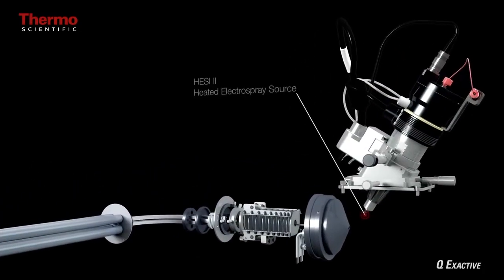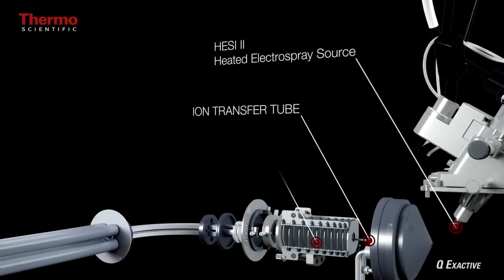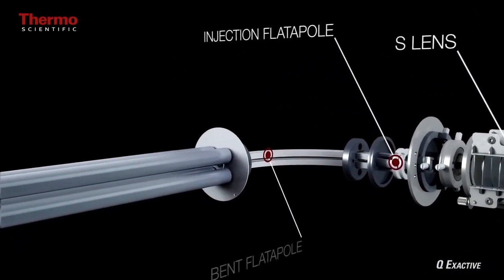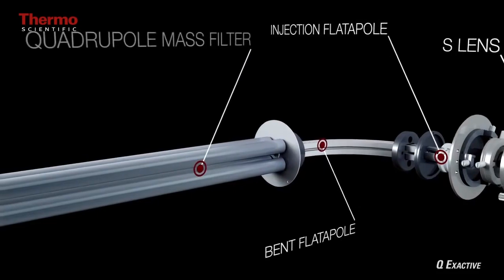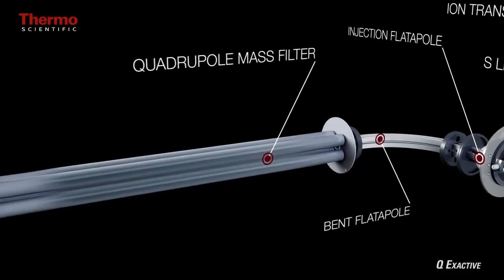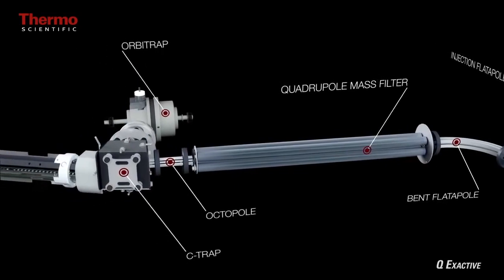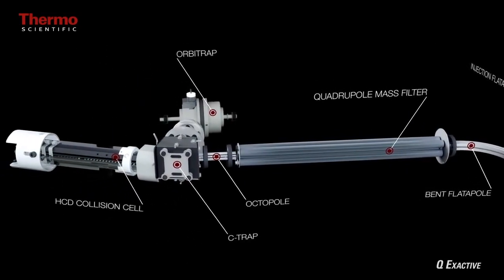This is showing the schematic of the design of the instrument with a front-end source, S-lens injection flattopole for cleaning up the ions, quadrupole mass filter for ion selection, with an HCD collision cell and an orbitrap in the back for detection.